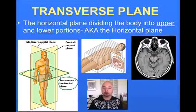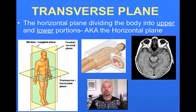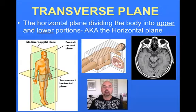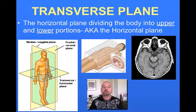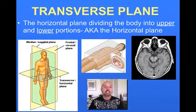So we have three different planes, three different perspectives we can view the body from. Sagittal, which divides the body into left versus right halves. Frontal, dividing the body into front versus back halves. And horizontal or transverse, dividing the body into upper versus lower halves. That's regions and planes, and I hope this has been helpful.